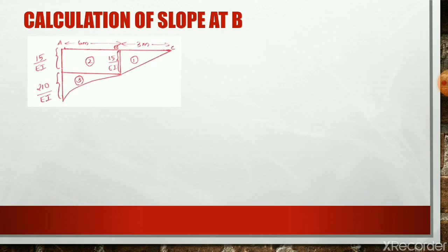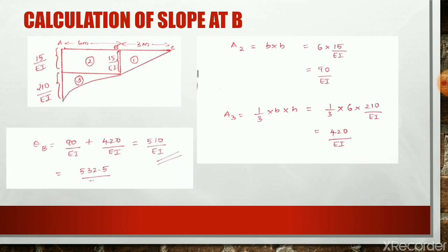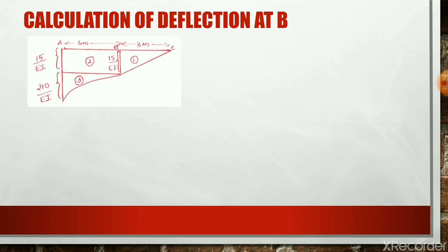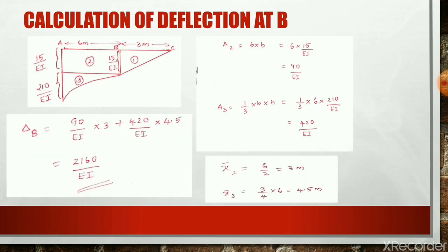For calculating the slope at B, we take only the AB portion, so only A2 and A3 are required: theta_B = A2 + A3. Similarly, for the deflection at B, we take only the AB portion using A2 and A3, but the centroidal distances X̄2 and X̄3 are now measured from support B only. Therefore, delta_B = A2×X̄2 + A3×X̄3. That covers the complete method for finding slope and deflection using the moment area method.